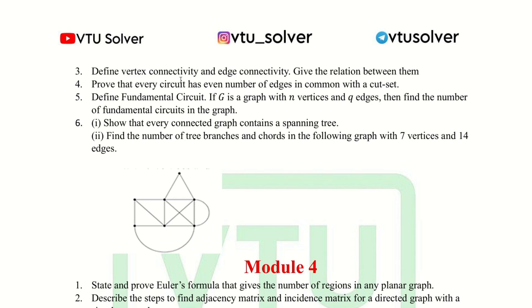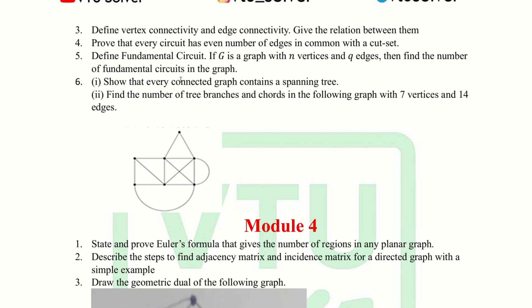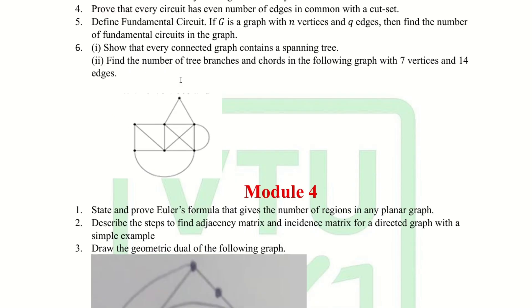The third question is: define vertex connectivity and edge connectivity and give the relation between them. The fourth question is: prove that every circuit has an even number of edges in common with any cut set. The fifth question is: define fundamental circuit; if G is a graph with n vertices and q edges, find the number of fundamental circuits in G.